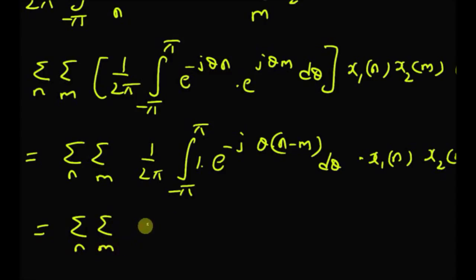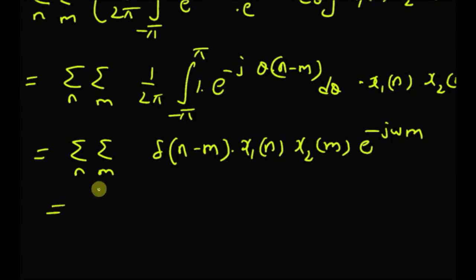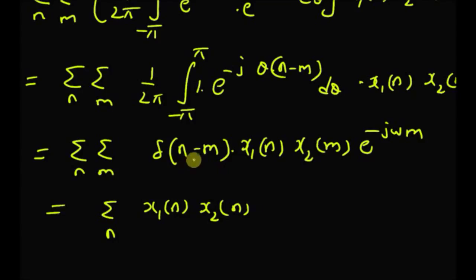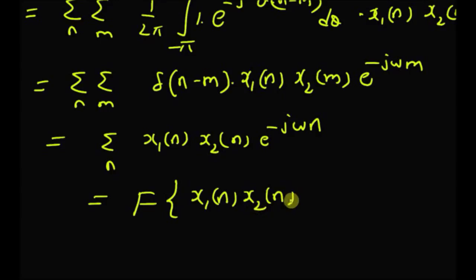The inverse DTFT of 1 is the unit impulse δ(n−m). So the double summation, with (1/2π) times this integral, becomes summation over n and summation over m of δ(n−m) · x1(n) · x2(m) · e^(−jωm). By the sifting property of the delta function, δ(n−m) is 1 only when n=m, so m is replaced by n, giving summation over n of x1(n)·x2(n)·e^(−jωn). By definition, this is the DTFT of the product x1(n)·x2(n). Hence the property of convolution in frequency domain is proved.